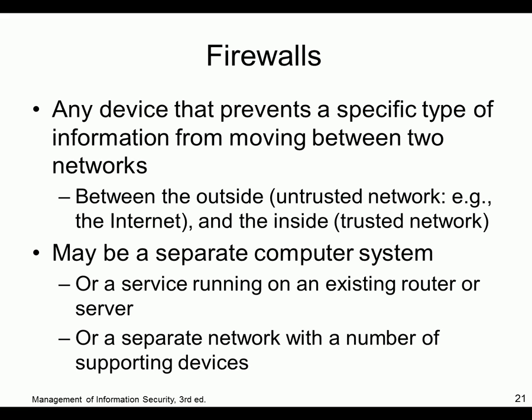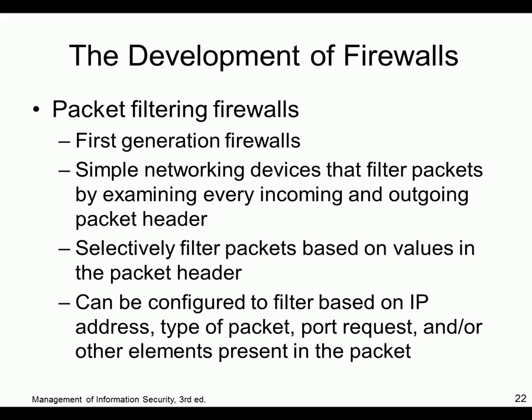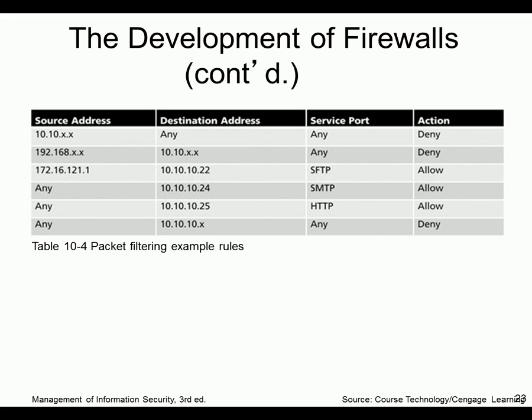A firewall is a connection between an untrusted outside and a trusted inside. It could be on a separate computer or software built into yours. Packet filtering — the original type — looks at each packet by source, destination, port, or other criteria and filters based on that. For example: block the 10.10 private IP address, block 192, but allow the 172 network. Or if email or web traffic is coming in to a specific host, let it in; anything else, deny it. This is essentially an ACL for incoming mail server and web server traffic.